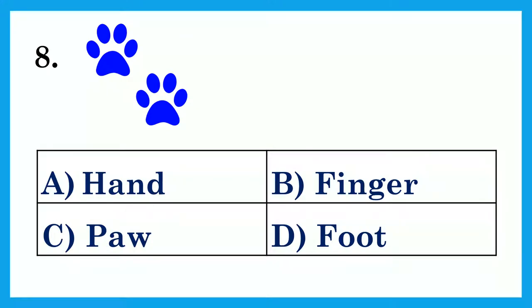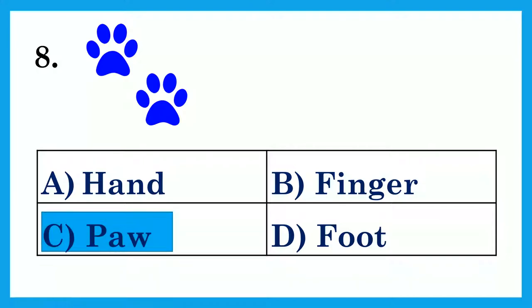Look at the picture and choose the correct word for it. Option A: Hand. Option B: Finger. Option C: Paw. Option D: Foot. The answer is Option C: Paw.